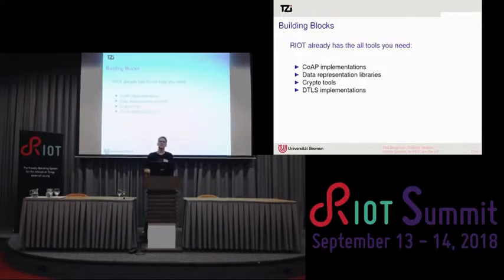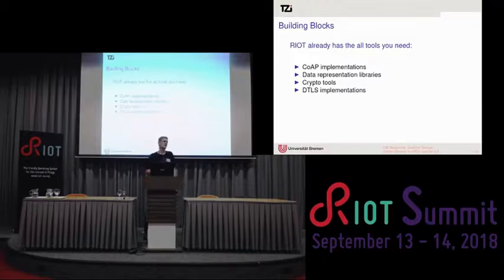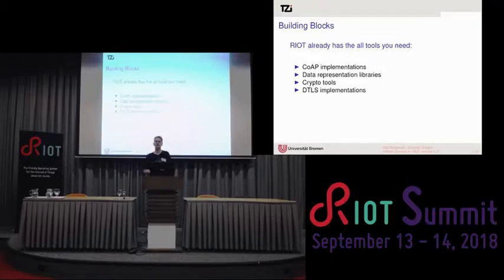RIOT already brings a lot of building blocks and tools needed for this. We have several CoAP implementations including gcoap, nanocoap, and microcoap, plus a libcoap port. There are libraries for representing data such as CBOR and tiny CBOR implementations, but you could also use ASN.1 or JSON. There's also a bunch of crypto tools including parts of major crypto libraries supporting embedded devices, such as TweetNaCl and micro-ECC.